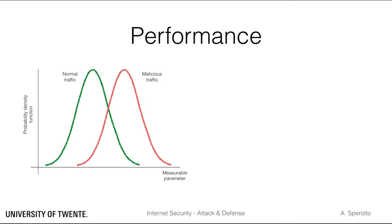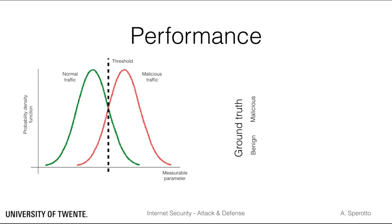Let's look again at the overlapping normal traffic and malicious traffic distributions. Now that we know about ground truth, we can say that those distributions are built on the ground truth dataset. Let's assume the IDS uses a threshold to distinguish between positive and negative samples. We are now in a situation in which each sample has acquired two labels: one given by the ground truth and one given by the IDS. If the ground truth and the IDS output are in agreement on the nature of a sample, we have a correct classification. If not, we have an error.